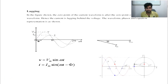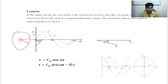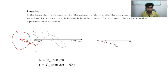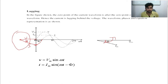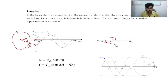Next is lagging phase: current lags voltage by an angle phi. As seen on the waveform, this is the voltage and this is the current — current lags voltage by angle phi. This is an inductive load example. The equations are v = Vm·cos(ωt) and i = Im·cos(ωt − φ).